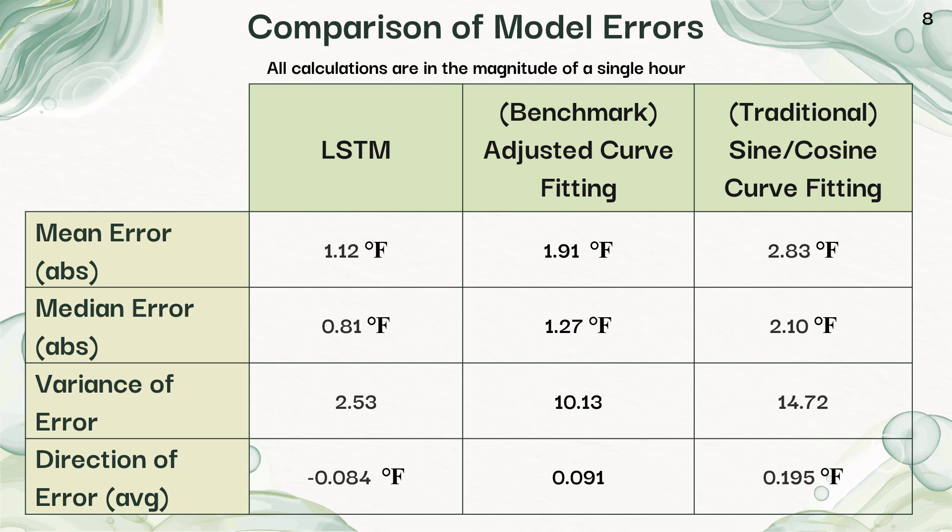So in this table, I'm comparing my LSTM to the benchmark to the traditional model. And my LSTM outperformed both the other models on every metric that I looked at for errors. The variance is something I want to point out here and is particularly significant because it means not only does it have a lower mean absolute error, it's way more consistent, which is really important in applications that the error is much more predictable.